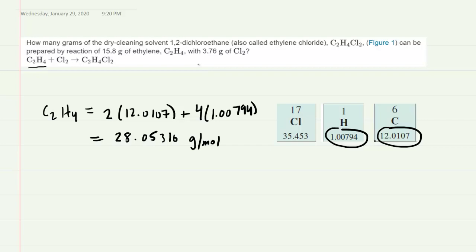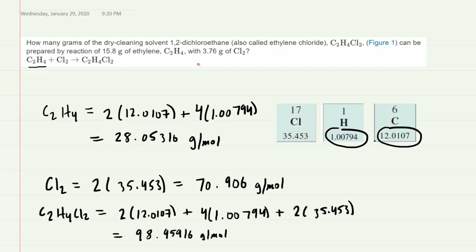So that's how we find the molar mass of C2H4. We will find the molar mass of the other formulas in a similar manner. So there are the computations. If you'd like to pause the video to make sure they make sense, feel free to do so. We have the molar mass of the Cl2, and then the molar mass of the C2H4Cl2. Let's write the three molar masses beneath each compound's formula in the equation.